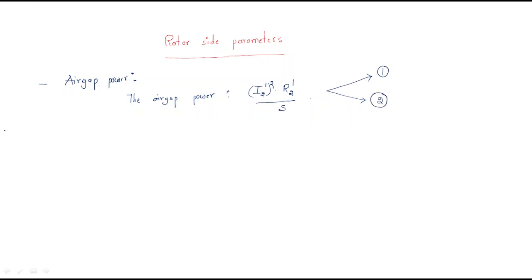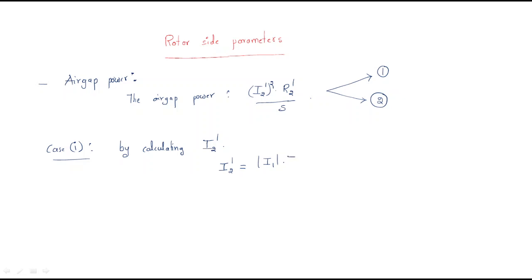Case 1: If we first calculate I2-dash, it becomes very easy. The formula for I2-dash equals I1 times Z2 divided by (Z2 plus Z3). This formula is obtained from the modified equivalent circuit of the induction motor.